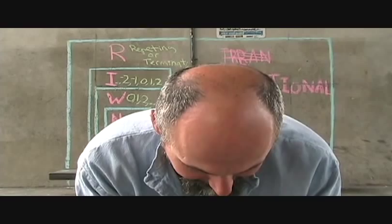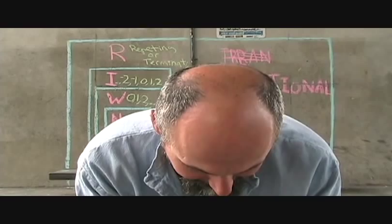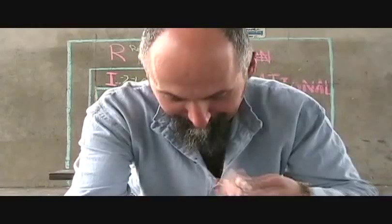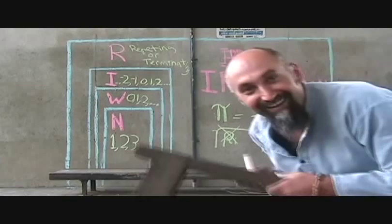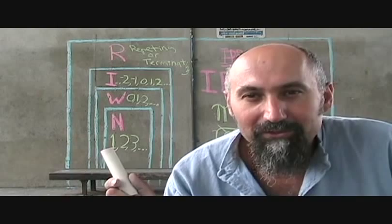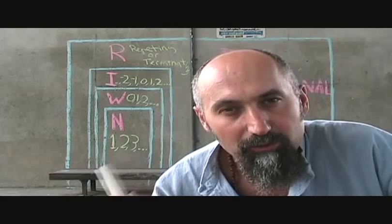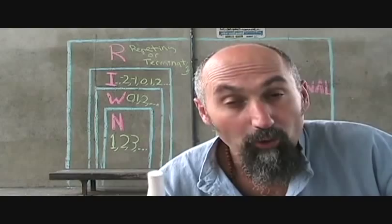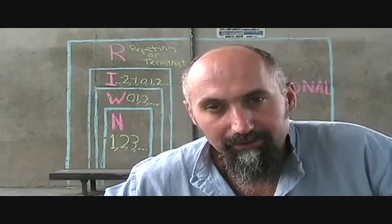Let's talk about this. The number set you see there is called natural numbers — the first number set that us as human beings really grasp. Basically it was counting from one all the way up: one, two, three, four, and so on to infinity. But we had no concept of what infinity was thousands of years ago.